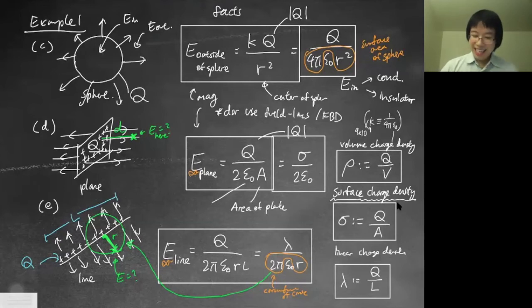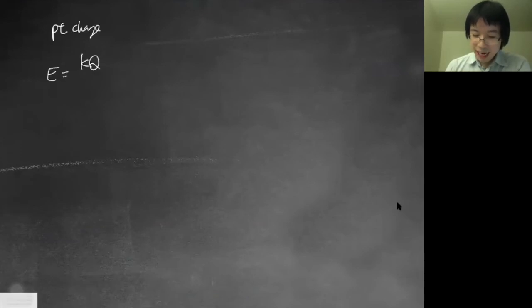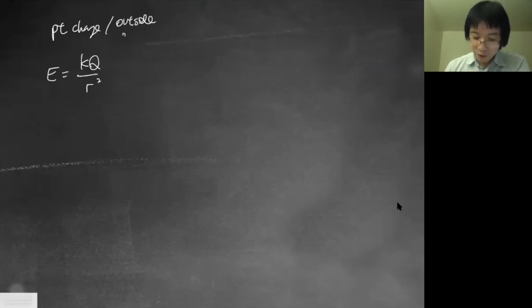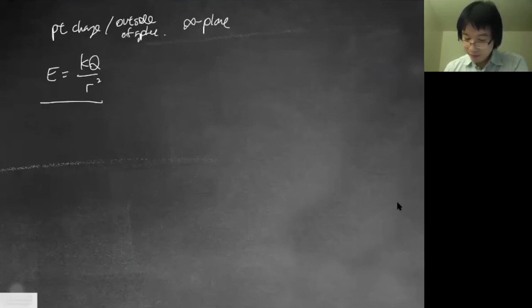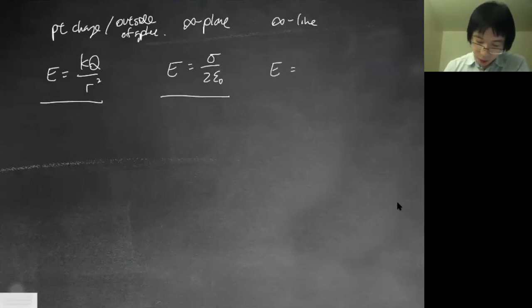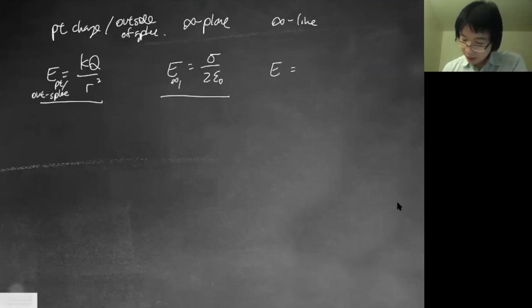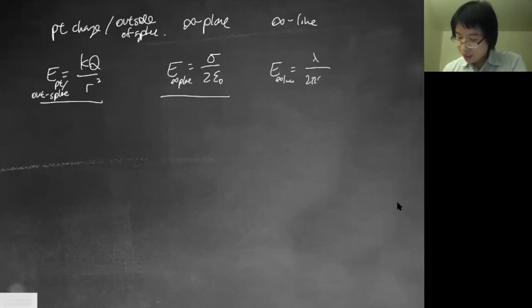To summarize the formulas: for a point charge or outside a sphere, E = K|Q|/R². For an infinite plane, E = σ/(2ε₀). For an infinite line, E = λ/(2πε₀r). We'll circle back to more advanced electric field topics in tomorrow's lecture.